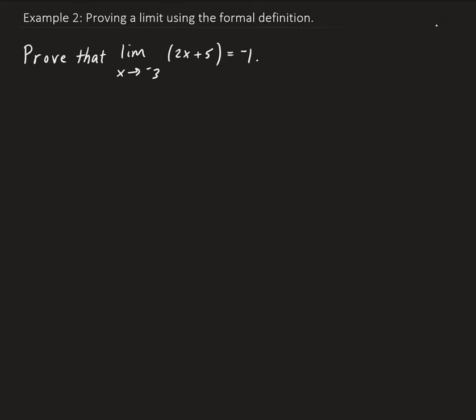We do this by using the formal definition of the limit. We start with the statement that the absolute value of f of x minus L is less than epsilon. For our example, c is negative 3, our function is 2x plus 5, and L is negative 1. We want to get to the form of x minus c less than delta — we're trying to find the value of delta in terms of epsilon. Once we have that, we can do a formal write-up of the proof.